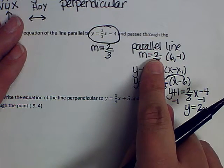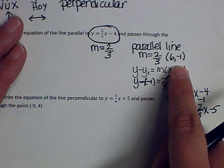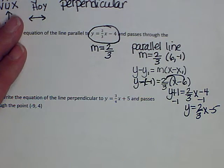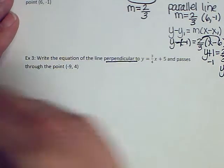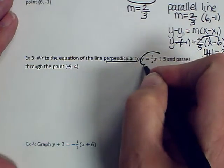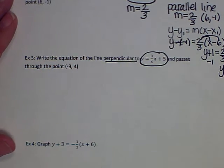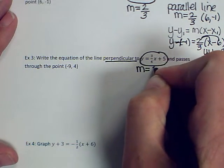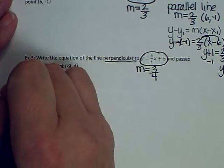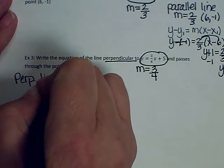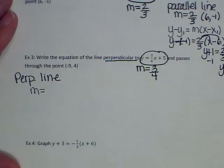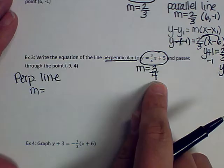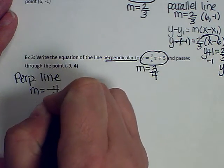I found the slope of the parallel line, used the point, plugged into point-slope, and solved for y. For the perpendicular example, I look at y equals 3/4 x plus 5, and the slope is 3/4. The perpendicular line must have the opposite reciprocal slope — the opposite reciprocal of 3/4 is negative 4/3.